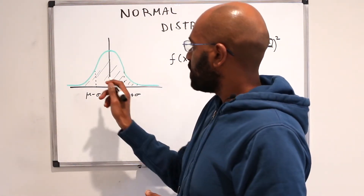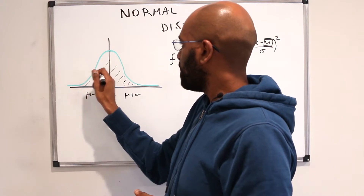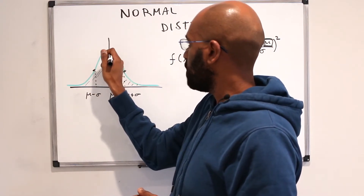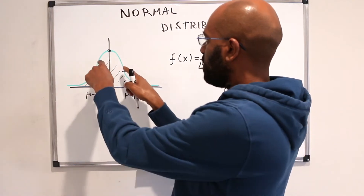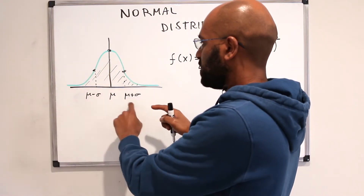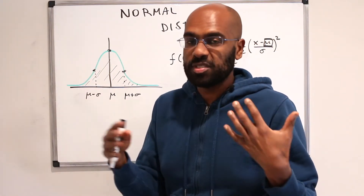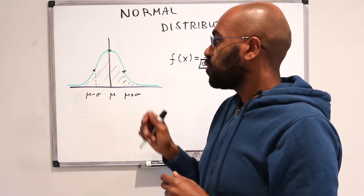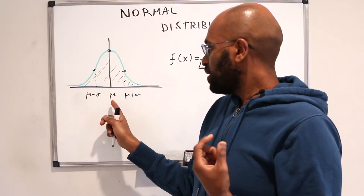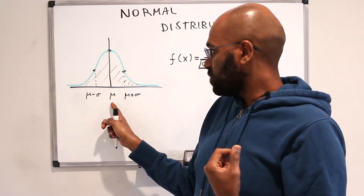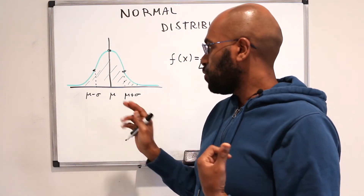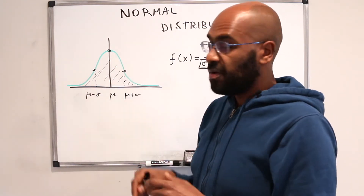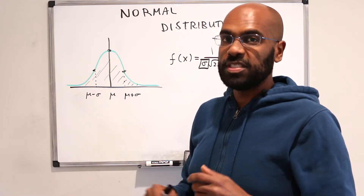Another thing that's often exploited is the fact that this function has a maximum right at mu, and inflection points at mu minus sigma and mu plus sigma. This helps with some estimates on probabilities. We're going to prove that there's a maximum at mu, inflection points at those locations, and that the area under the curve is one, all in this video.